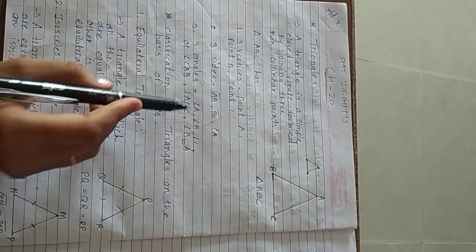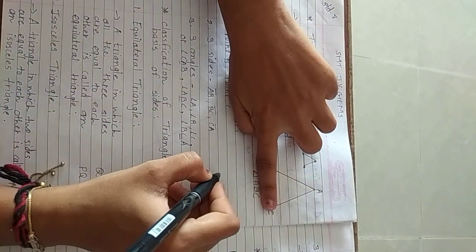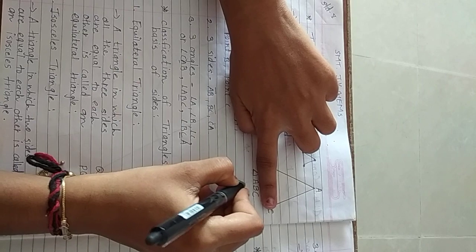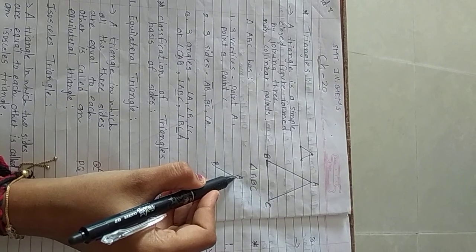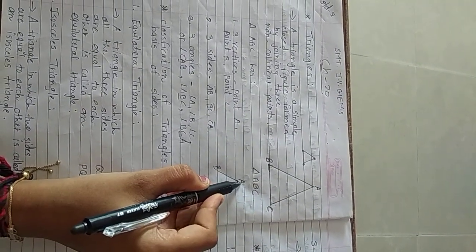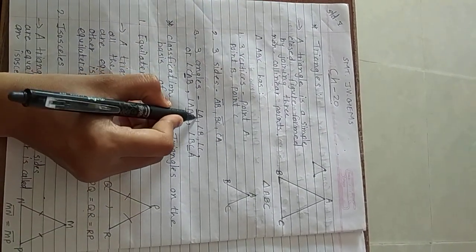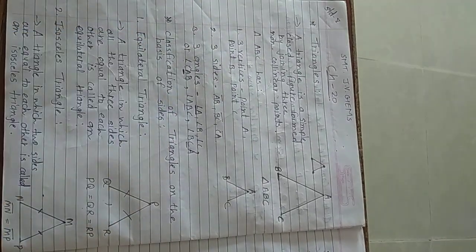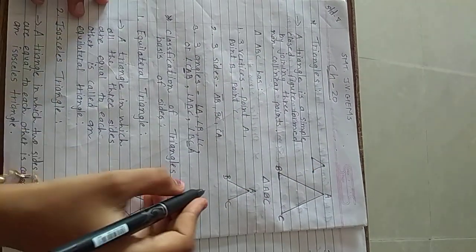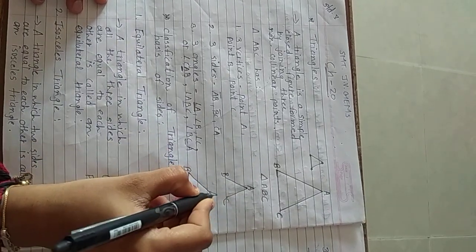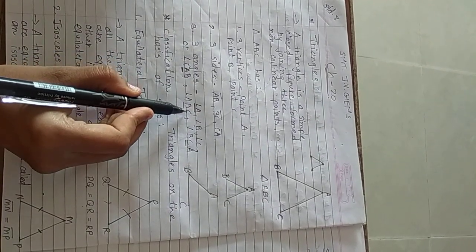Then there are three angles. The first is angle A. Angle A means if we do not see this portion, then we get the angle like this. The vertex is A, so A is always kept in between, and then we give the name. So we can write angle A or angle CAB. Then angle B — if we do not see this portion, then the angle will be like this. So here we can write angle B or angle ABC.